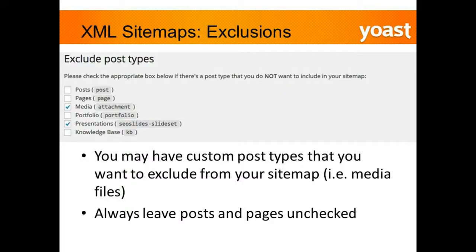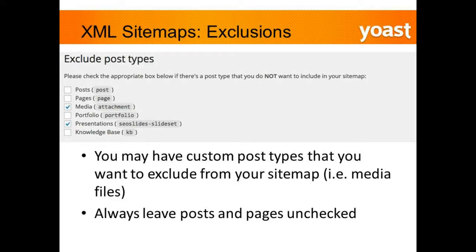For exclusions, depending on how complex your site is you may have multiple custom post types — pages and posts are post types. For example, an attorney website might have a custom attorney post type. If you want to include different post types in your sitemap, that's up to you. However, there are certain post types you may not want to include, like media and presentations.